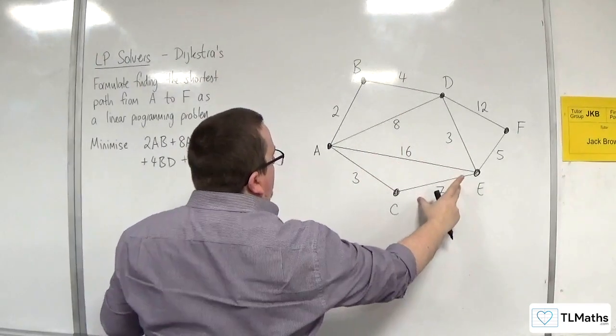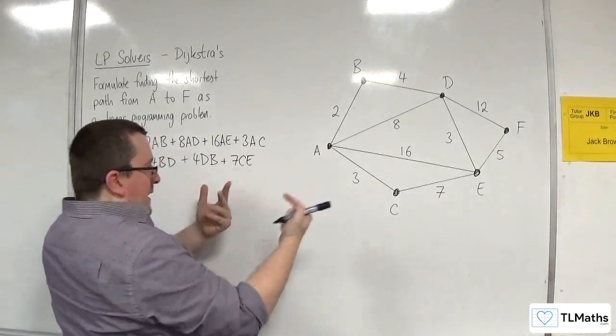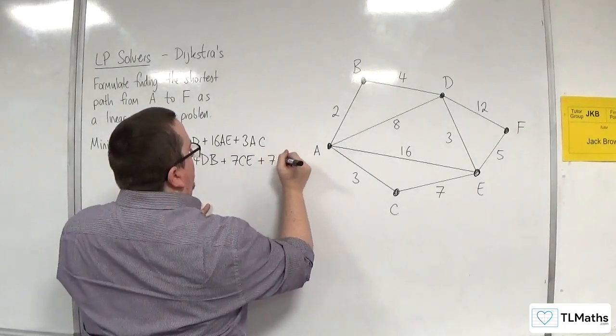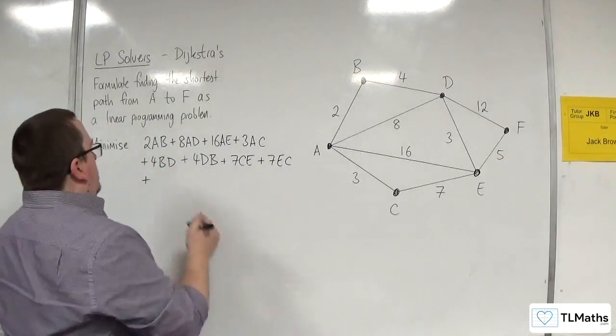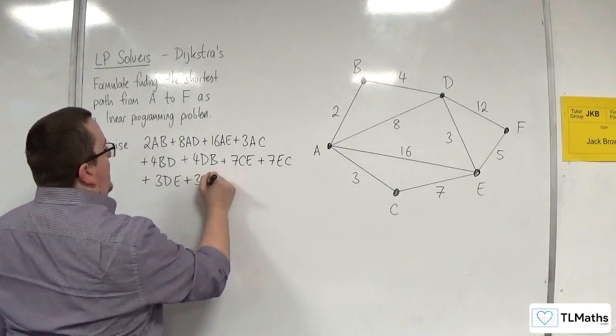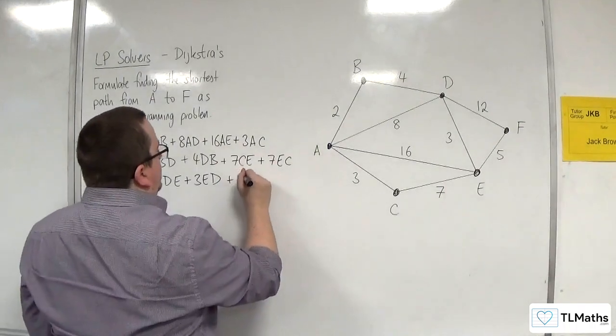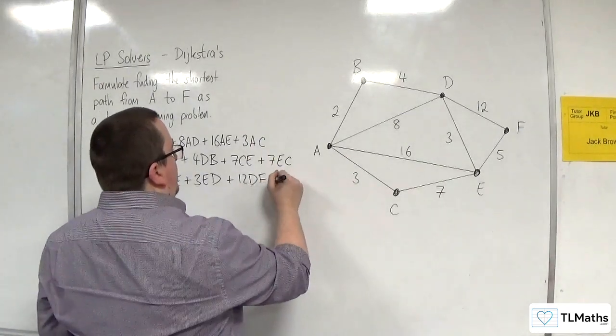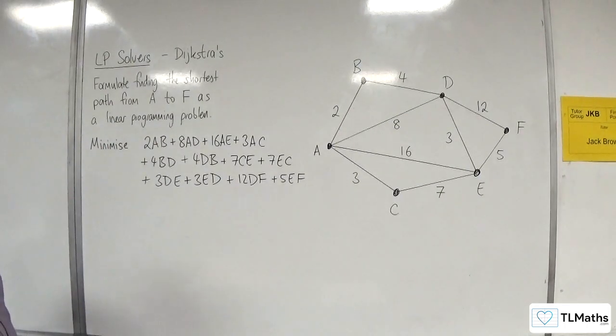So I've got that one sorted. Let's do this one next. So plus 7 lots of CE, and I'll have 7 EC because it's not directed. So plus 7 EC. Now the DE could either be in that one, you probably agree it could be in either direction. So 3 ED. And then we've got 12 lots of DF. Not FD because it's going to the end vertex. And 5 lots of EF. So that's my objective function.